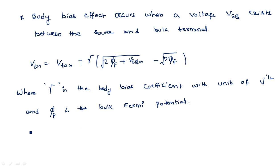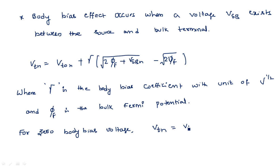For zero body bias voltage, when VSB equals 0, VTN equals VT0N. If you substitute VSB = 0 into the equation, the two square-root terms inside become equal and cancel, making the gamma coefficient factor equal to zero. So VTN equals VT0N when VSB is zero.